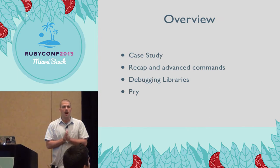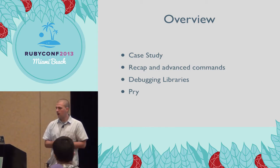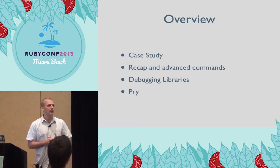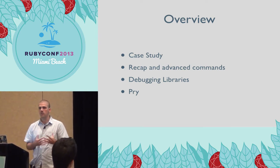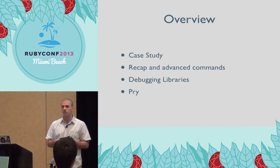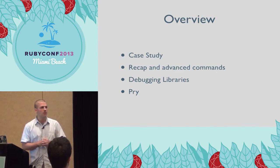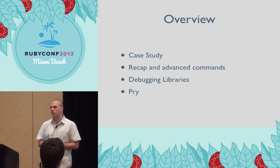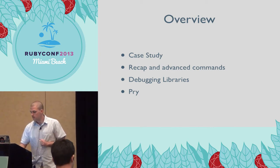Today I want to share my take on what it takes to be effective in doing debugging in Ruby. That's going to involve us looking at a case study. We'll look at some basic commands you can use in almost any library in Ruby that supports debugging. After that we'll recap, talk about some advanced commands, look at an overview of the debugging ecosystem so you'll know which library to use with which version of Ruby, and then we'll touch on Pry.